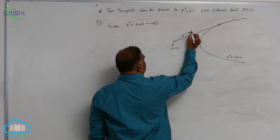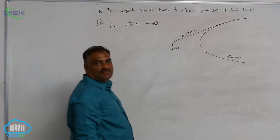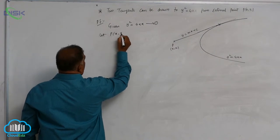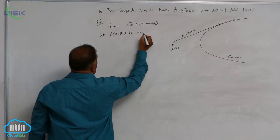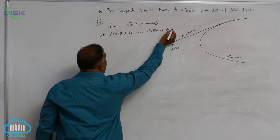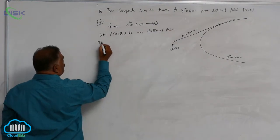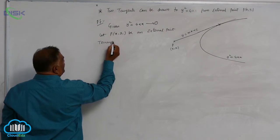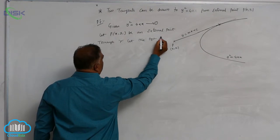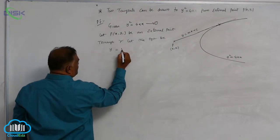Assume that the line is y is equal to mx plus c. Let P at x1, y1 be an external point. Through P, let the tangent be y is equal to mx plus c.